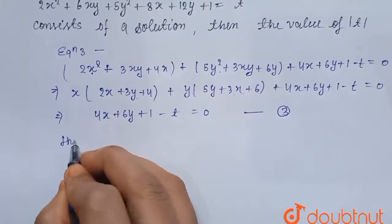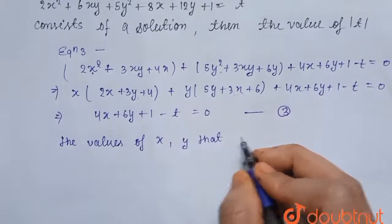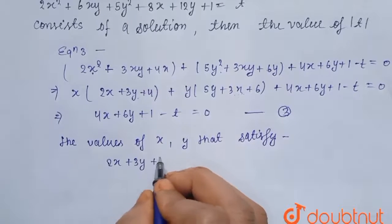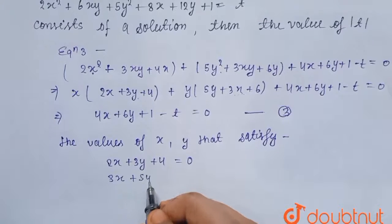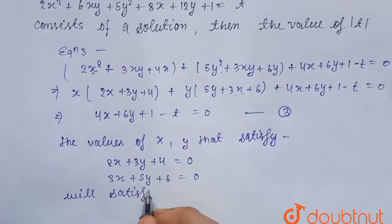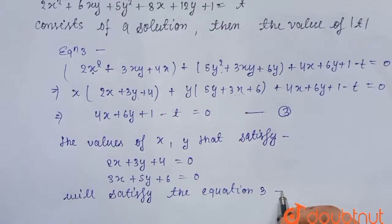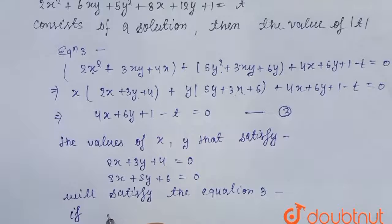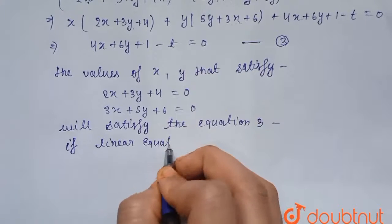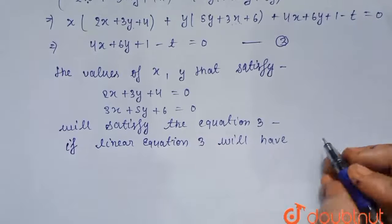We can say that the value of x, y that satisfied 2x plus 3y plus 4 equals to 0 and 3x plus 5y plus 6 equals to 0 will satisfy the equation 3rd only if equation 3rd, that is linear equation 3rd, will have a solution.